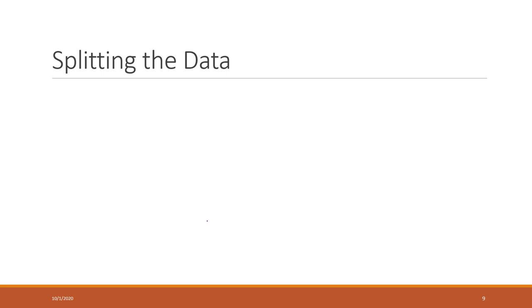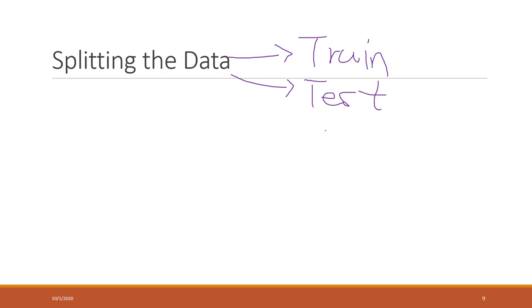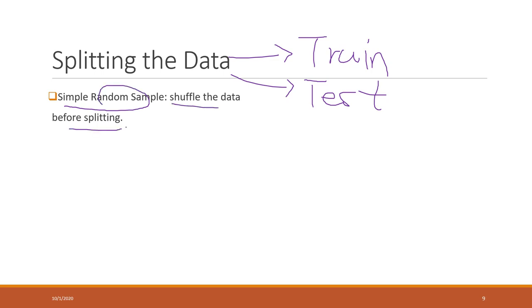Before we go into detail about KNN, let's talk about splitting data — splitting data for training and also for testing. There are several ways to split the data. We can randomly split the data by shuffling before splitting, which we used a lot in previous labs especially for regressions.